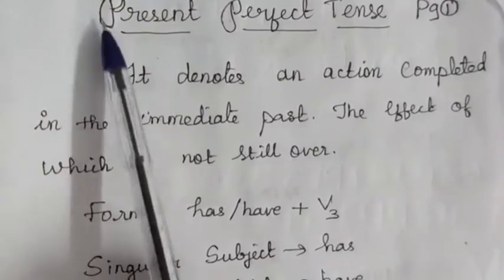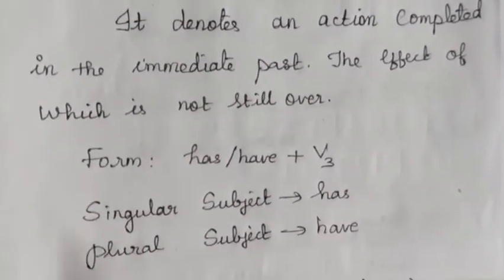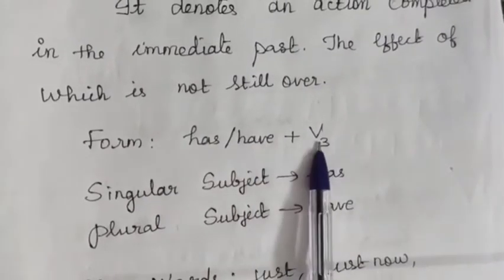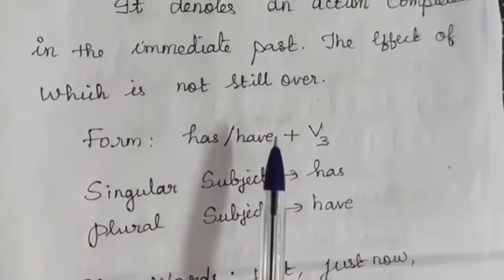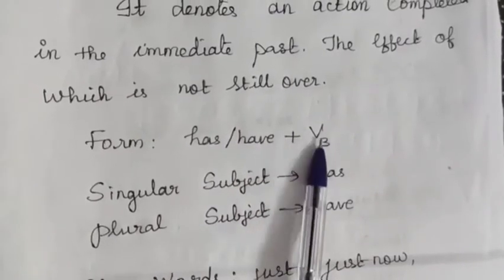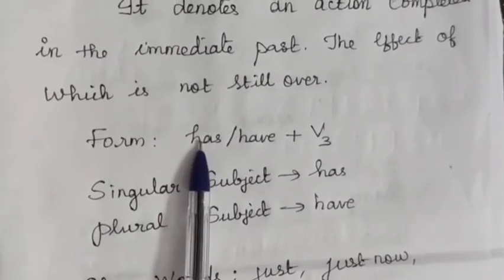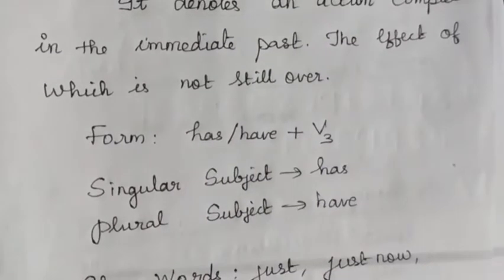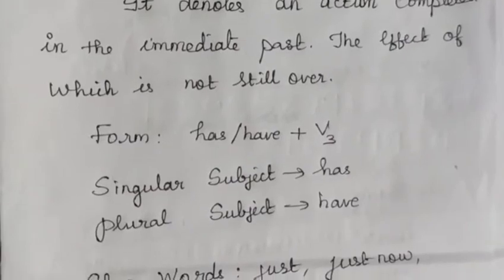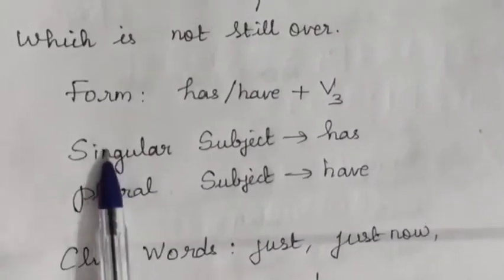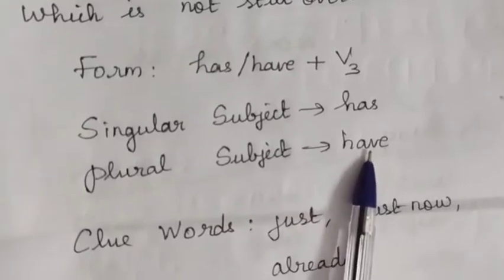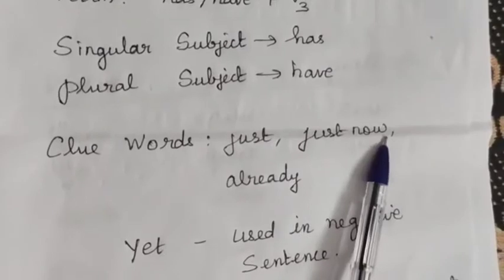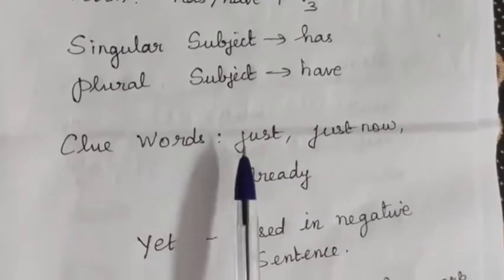The form of present perfect tense is: has or have plus verb 3. If the subject is singular, use 'has'. If the subject is plural, use 'have' plus verb 3. The clue words for present perfect tense are: just, just now, and already.